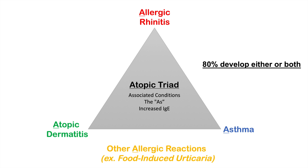Another associated 'A' condition is other allergies or allergic reactions. Atopic dermatitis patients have a predilection for food-induced allergic reactions like urticaria — approximately 10–20% will have issues with food allergies. Very early onset within the first three months of life is associated with specific allergies to foods like egg, milk, and peanuts.